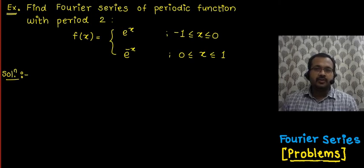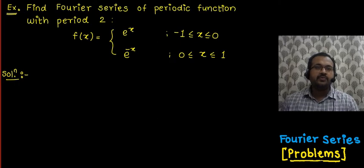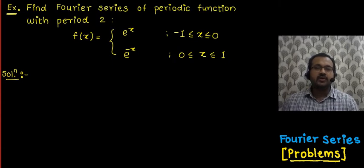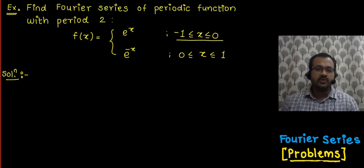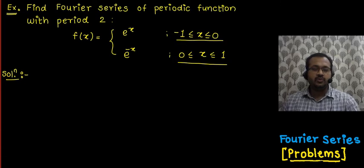Let's solve one example on Fourier series. Find the Fourier series of a periodic function whose period is 2. That periodic function is e raised to x in the interval minus 1 to 0, and e raised to minus x in the range 0 to 1.